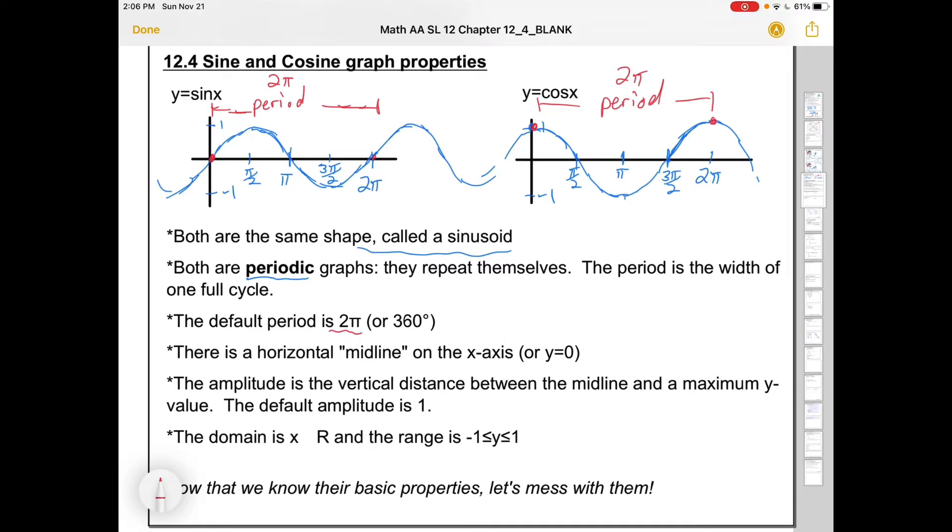There's this horizontal midline, which is just the x-axis running through it. And the equation for the x-axis is just y equals 0. And then there's something we call the amplitude. The amplitude is the distance between the midline and a maximum. It's always framed positively. It's how high it goes. The default amplitude on both of these is 1. So you can see it goes up to a max of 1 and down to a min of negative 1.